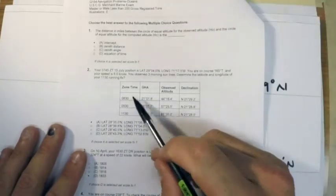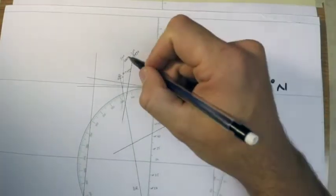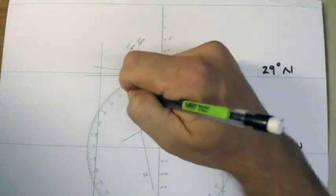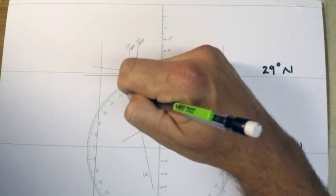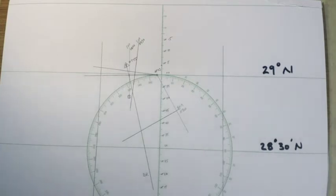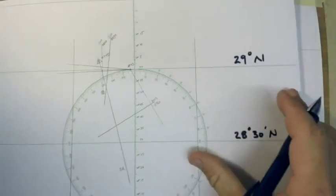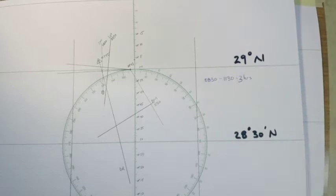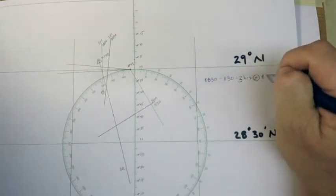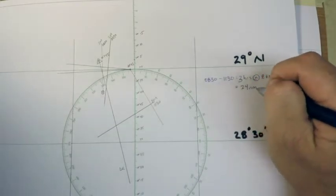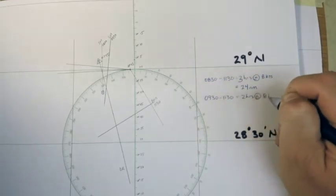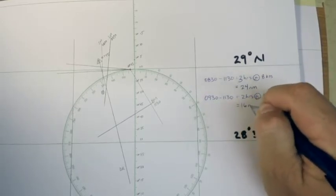This one we do not need to advance at all, but these 830 and 930 lines we do need to advance. There's other videos out there on how to do running fixes, so this is my method. I generally pick a point on the original sun line and then I advance it along the DR for the distance and the time required. For the 830 line to the 1130 line that was three hours at eight knots, so this equals 24 nautical miles. The 0930 line to the 1130 line equals two hours again at eight knots, so that's going to be 16 nautical miles at 165 degrees true.